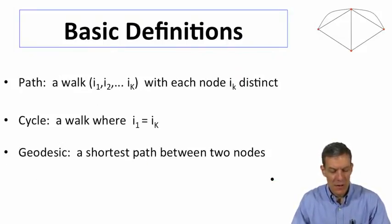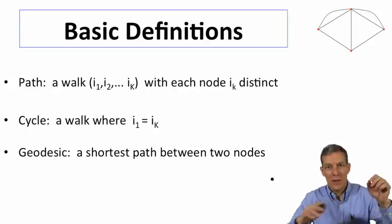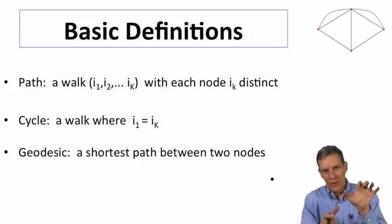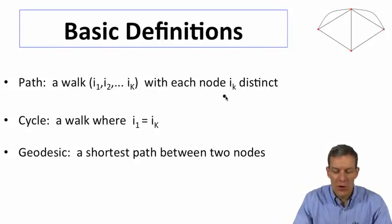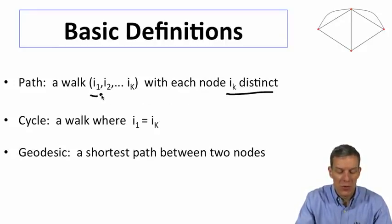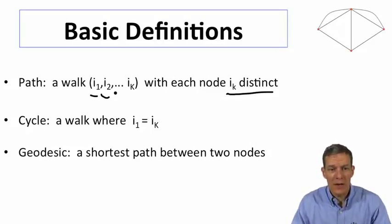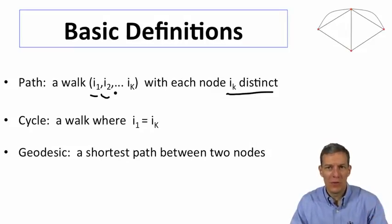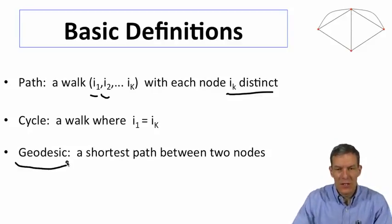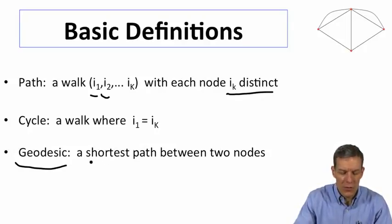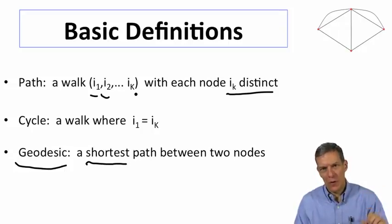Before I go to a picture, let's also talk about paths, cycles, and geodesics. A walk is going to be some set of links each connecting to another node, but they can possibly cycle back on each other. A path is going to be a walk where each node is distinct. So we start at i1, we go to a new node i2, then we go to some node i3 which is not in the previous sequence and so forth until eventually we reach iK. A cycle is going to be a walk where we end up back at the node that we started at.